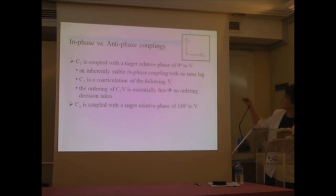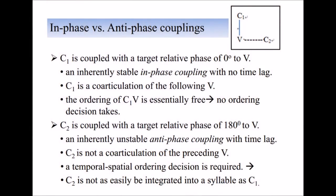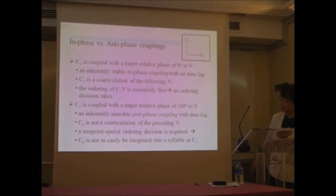So again, C1 onset consonant is a co-articulation of the following vowel. The ordering of the onset consonant and the vowel is essentially therefore free. There is no cognitive load. No ordering decision takes place. On the other hand, C2, the coda consonant, is coupled with a target relative phase of 180 degrees to V. This is an inherently unstable anti-phase coupling with time lag. So here's a time lag. So a coda consonant C2 is not a co-articulation of the preceding V. And this is unlike C1, a temporal-spatial ordering decision is required.